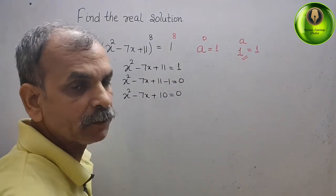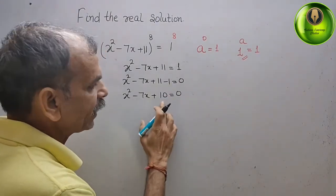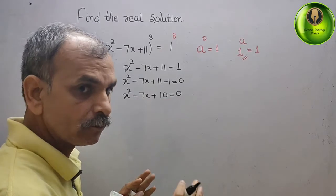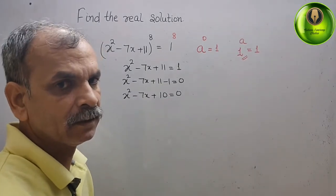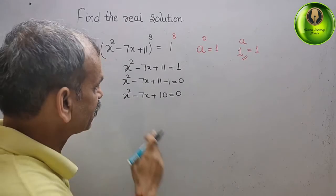Now, go for middle term splitting. 1 into 10 is 10. 2 into 5 is 10. 2 plus 5 is 7.